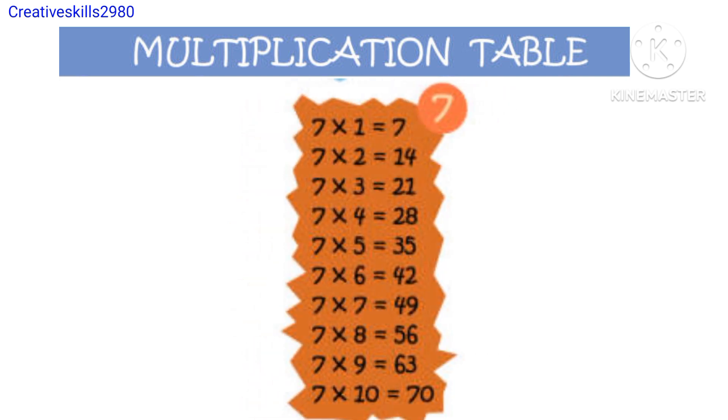7 1s are 7, 7 2s are 14, 7 3s are 21, 7 4s are 28, 7 5s are 35, 7 6s are 42, 7 7s are 49, 7 8s are 56, 7 9s are 63, 7 10s are 70.